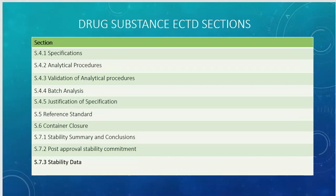Specifications are your final release specifications for newly manufactured drug substance before it goes into fill-finish for drug product. You define your release tests and ensure that the drug substance you made is of appropriate quality to move forward into drug product. Analytical procedures list how you are testing those specifications — all the tests you perform on your DS samples. Validation data demonstrates that the analytical method you are using is validated and gives consistent results every time you use that test.